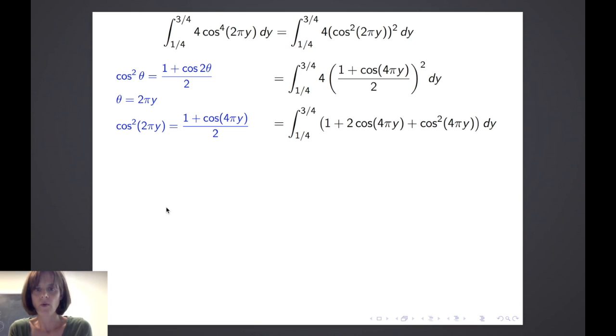We get the integral from 1 fourth to 3 fourths of 1 plus 2 times the cosine of 4 pi y plus cosine squared of 4 pi y dy.